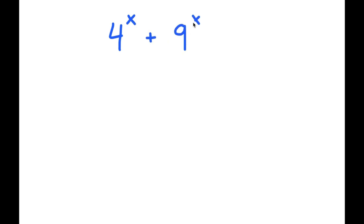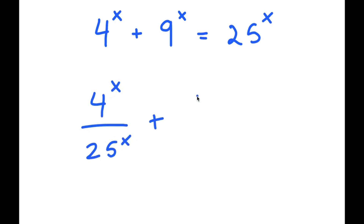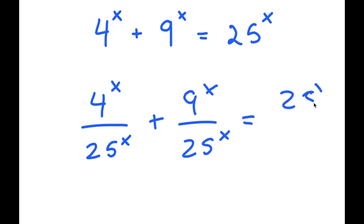Alright, so in this video I'm going to solve the equation 4 to the power of x plus 9 to the power of x is equal to 25 to the power of x. To solve this, I'm going to start off by dividing every term by 25 to the power of x. So I get 4 to the power of x over 25 to the power of x, plus 9 to the power of x over 25 to the power of x, equals 25 to the power of x over 25 to the power of x.